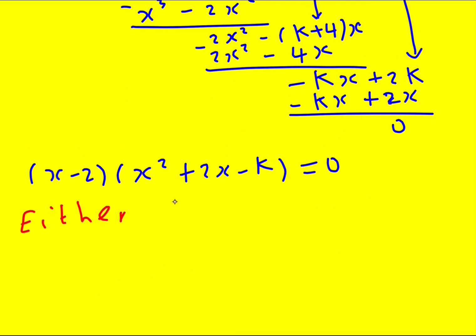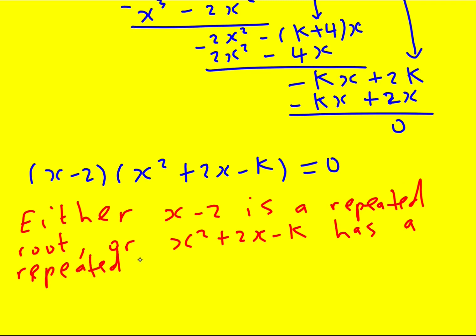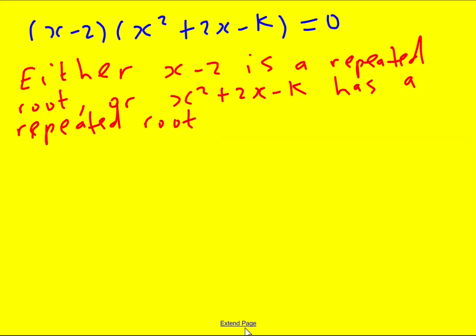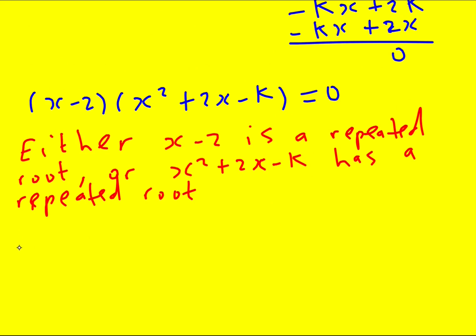And either x-2 is a repeated root, or x² + 2x - k has a repeated root. So I'm going to call this one number 1. In that case, we can basically substitute 2. If x-2 is a repeated root, I can substitute 2 into here and I must get 0. So it would be 2² + 2×2 - k equals 0. That would be 4 + 4 - k, so k would be 8.